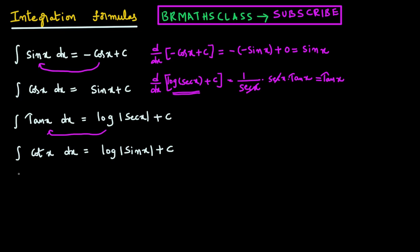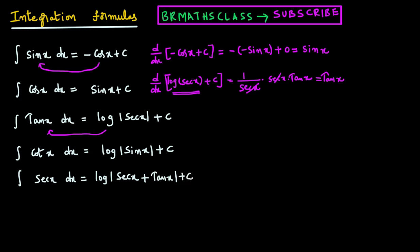Now we will see another two formulas. The fifth is the integral of secant x dx. Integral of secant x dx is log modulus of secant x plus tan x plus c. We write modulus because logarithm is defined for positive numbers only. Why is integral of secant x dx equal to log mod of secant x plus tan x plus c? If we differentiate this...